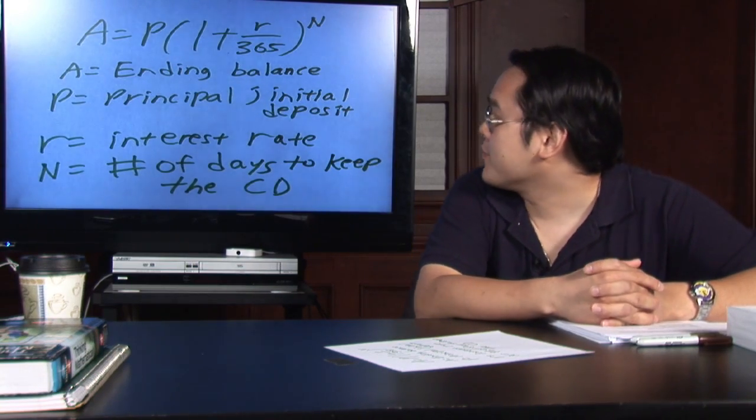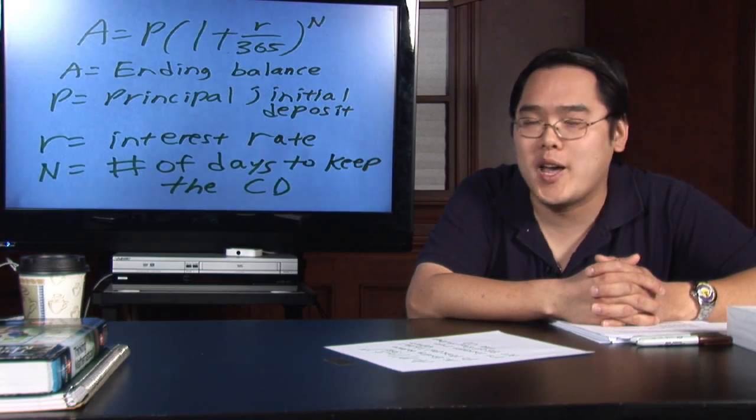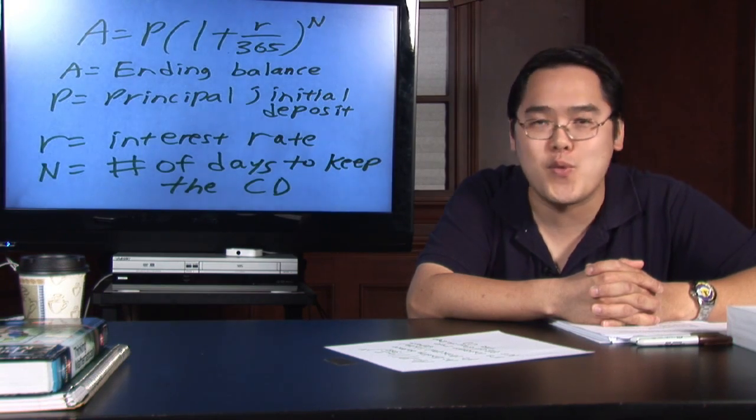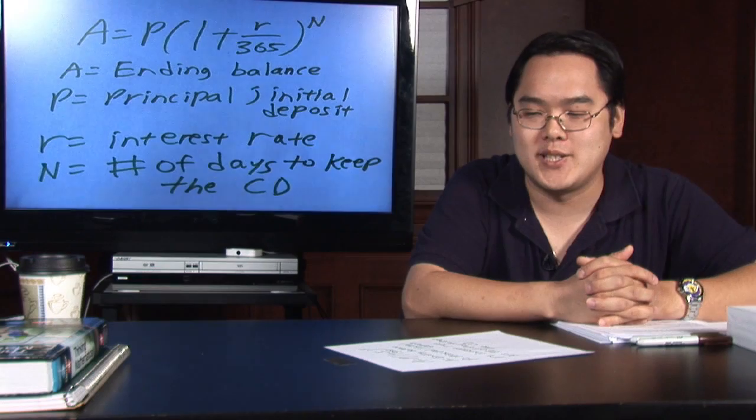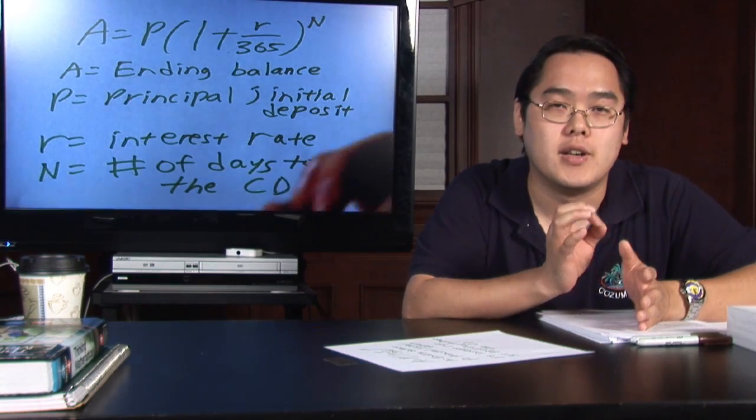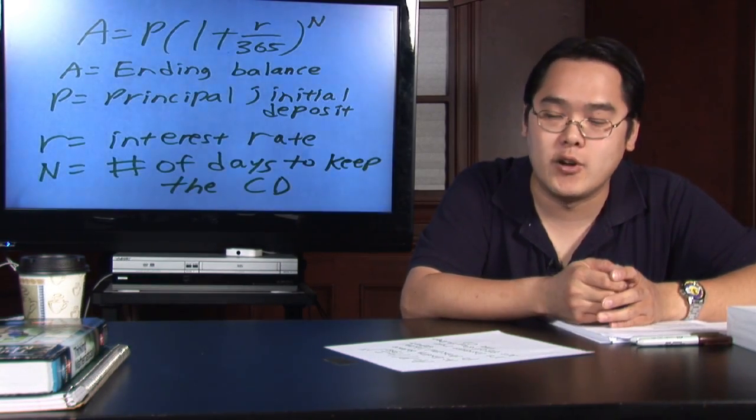Now there's a lot of letters that you see there. A equals P times one plus R over 365, all that to the nth power. Woohoo! Lots of different things there. But if we break it down little by little, here's what they mean.